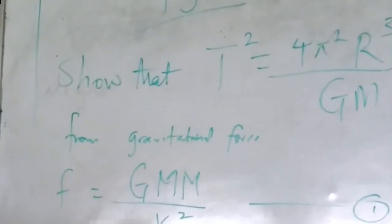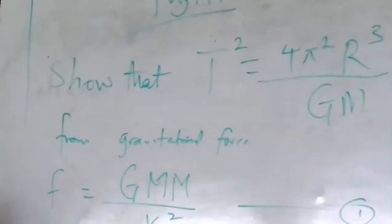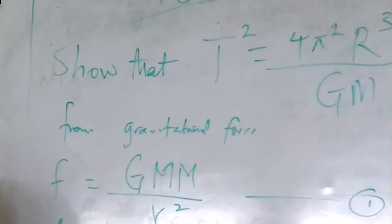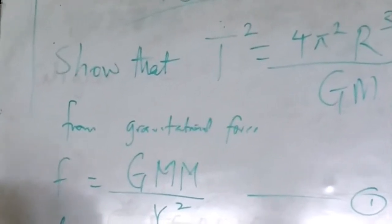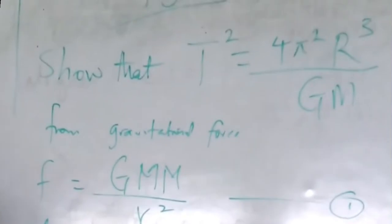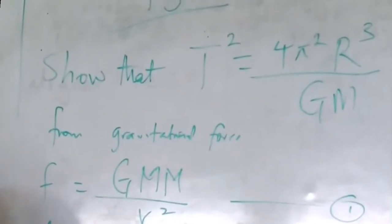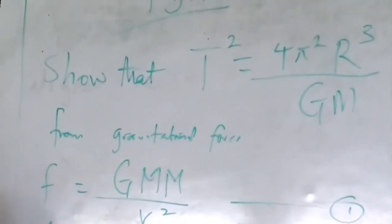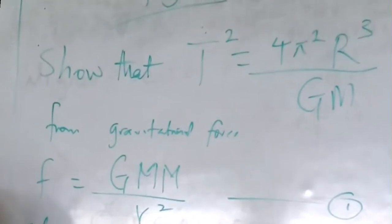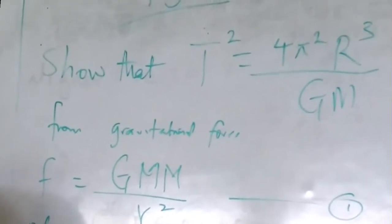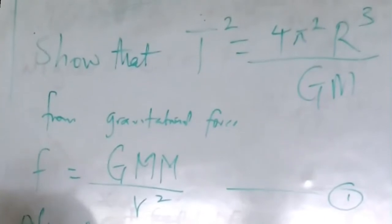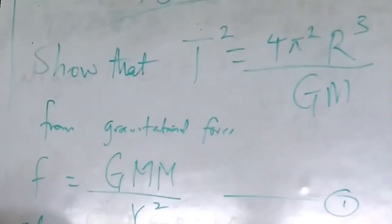So equating: G M₁ M₂ over r² equals mv² over r. M cancels with M, and one r cancels, so we are left with GM over r equals v². That gives us v² equals GM over r — equation 3.